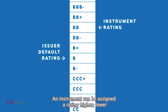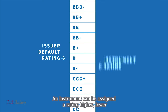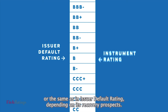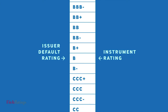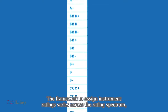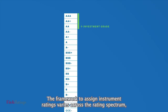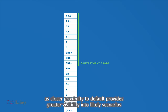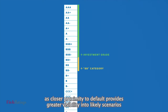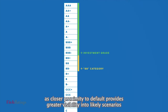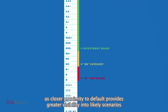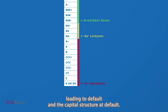An instrument can be assigned a rating higher, lower, or the same as an issuer default rating depending on its recovery prospects. The framework to assign instrument ratings varies across the rating spectrum, as closer proximity to default provides greater visibility into likely scenarios leading to default and the capital structure at default.